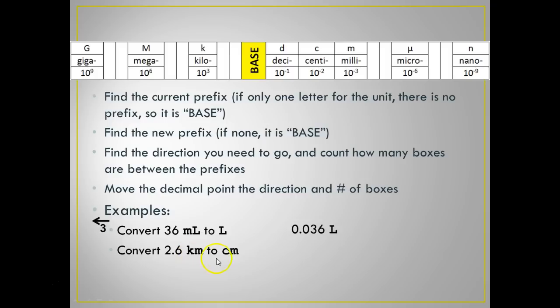Convert 2.6 kilometers to centimeters. So, I start with kilo. I end with centi. So, I'm going to start here with kilo, and I'm trying to go to centi. So, I'm going to move one, two, three, four, five to the right. So, write five with a right arrow over it to say I'm going five to the right, and I'm going to move that decimal point. One, two, three, four, five, which leads me to 260,000 centimeters. Simple.